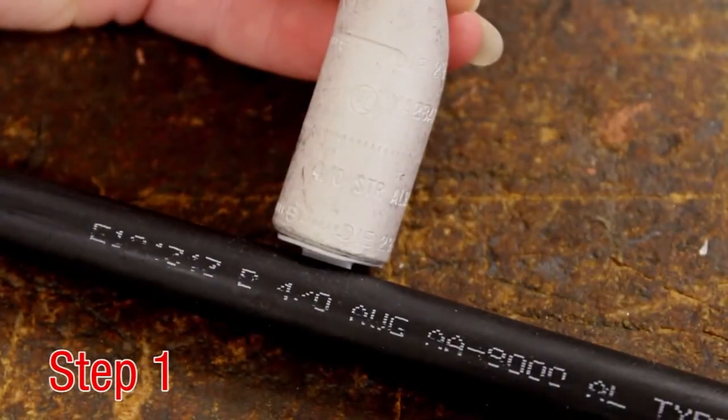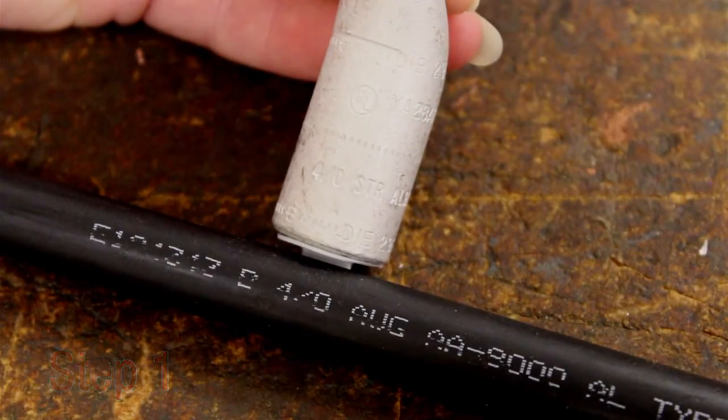Step 1. Select the appropriate hydent connector for the conductor to be crimped and verify the conductor and connector markings are the same.